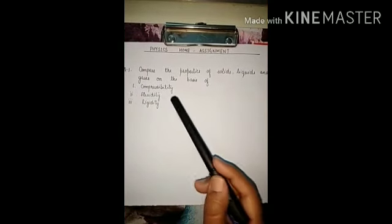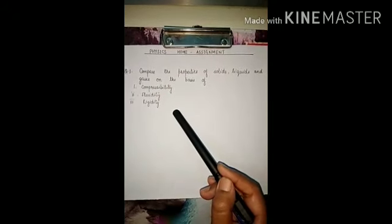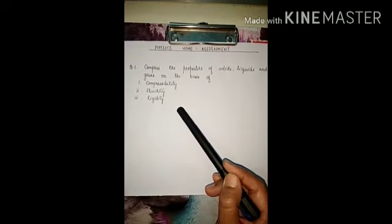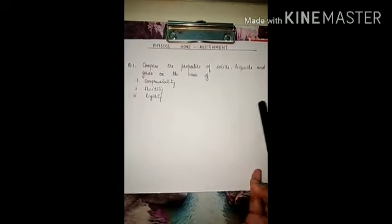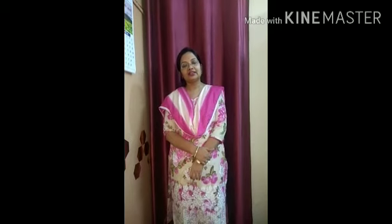Your home assignment for today is to compare the properties of solids, liquid and gases on the basis of: compressibility, fluidity, and rigidity. I hope you have understood the difference between solid, liquid and gas. I request you to watch this video again and again so that you can understand the topics very well. This completes our chapter on matter. I will upload the lesson plan of this chapter. You will make one interleave copy for physics and do all the lesson plan work in your fair copy. The worksheet and home assignment work you will do in one rough copy. Thank you for watching.